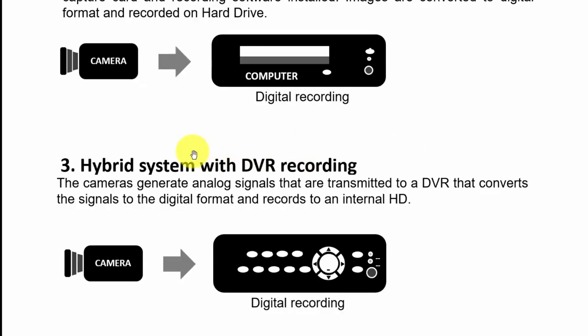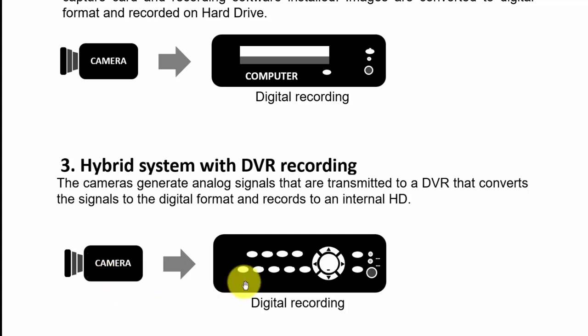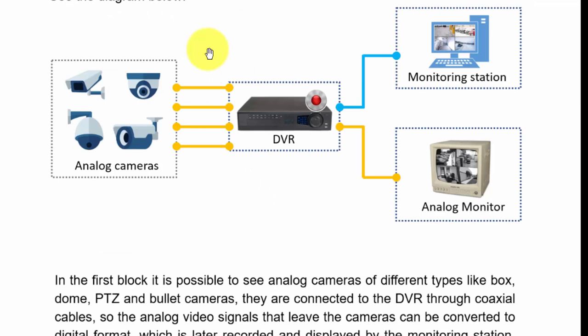Then the evolution to a hybrid system with DVR recording. A DVR is a digital video recorder — signals from the camera come into the DVR, which converts from analog to digital and records on a hard drive. We also talked about different types of cameras: box, dome, PTZ, and bullet cameras.